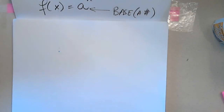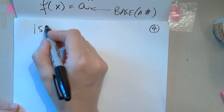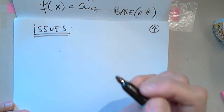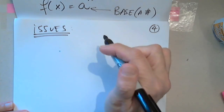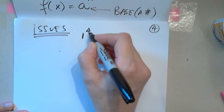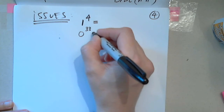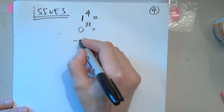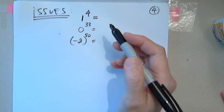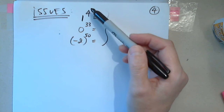But it has several issues. Before we continue, let's talk about the issues. Can I raise 1 to the 4th power? Can I raise 0 to the 33rd power? Can I raise negative 2 to the 50th power? The question is not to give me the answer, but are these allowed? Are they possible?